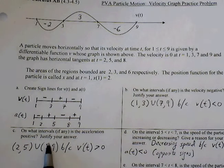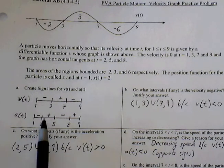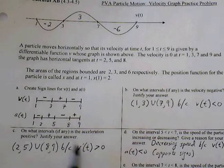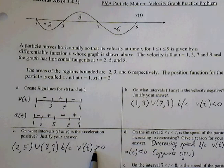Part C, what interval is acceleration positive? We just read our sign line here, from 2 to 5 and 8 to 9, simply because v prime of t is greater than 0, or you can say a of t is greater than 0.